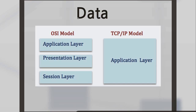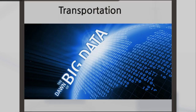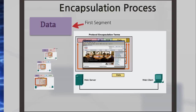In the transport layer, the data breaks into little pieces or segments in order to travel. While the segment travels, the encapsulation process adds additional protocol header information to the data before transmission. When sending messages on a network, the protocol stack on a host operates from the top to bottom.